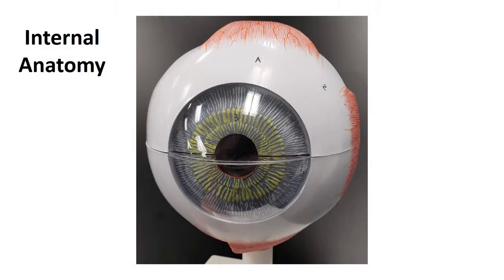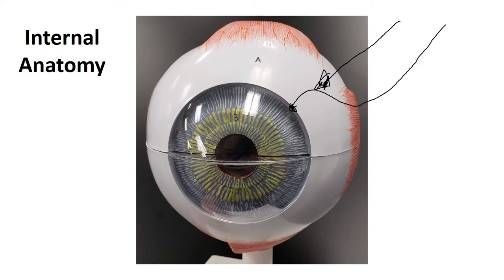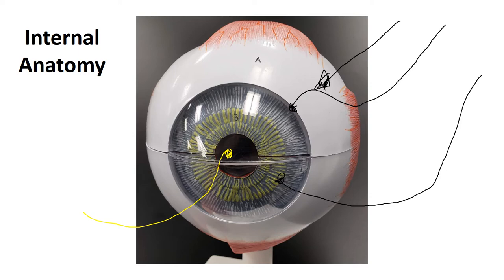Let's look at the eye. Looking at this particular model, the white portion is going to be our sclera. The clear, very transparent portion of the eye is our cornea. Where it's colored, that is going to be our iris. And where it is black — I'll use yellow so you can actually see it — that is going to be our pupil.